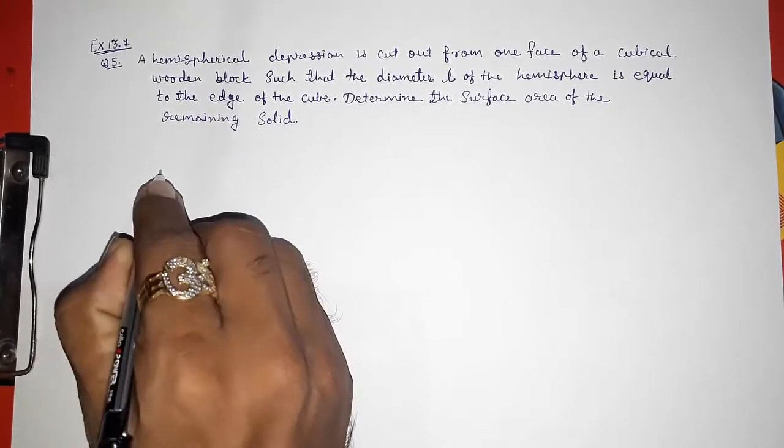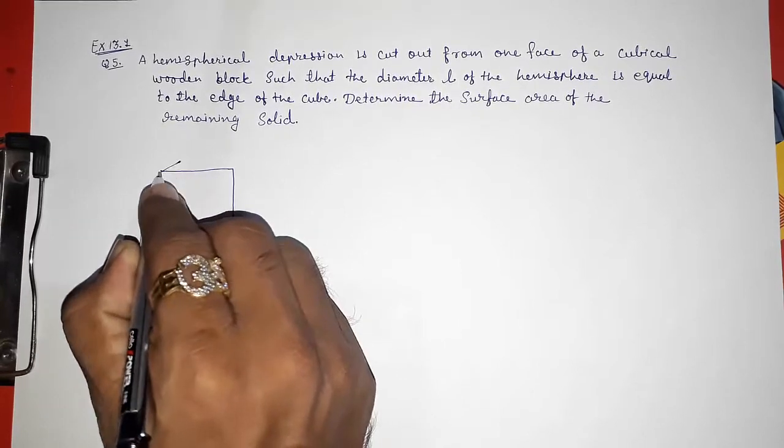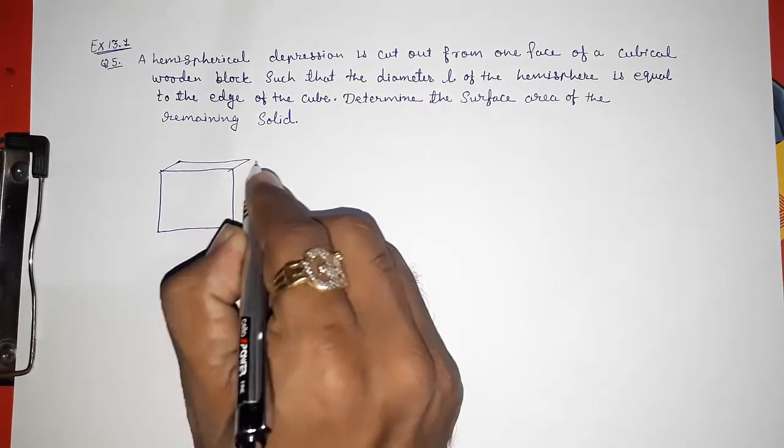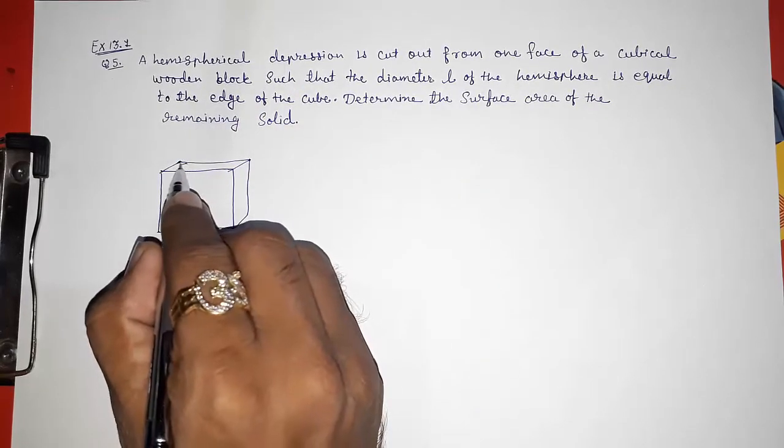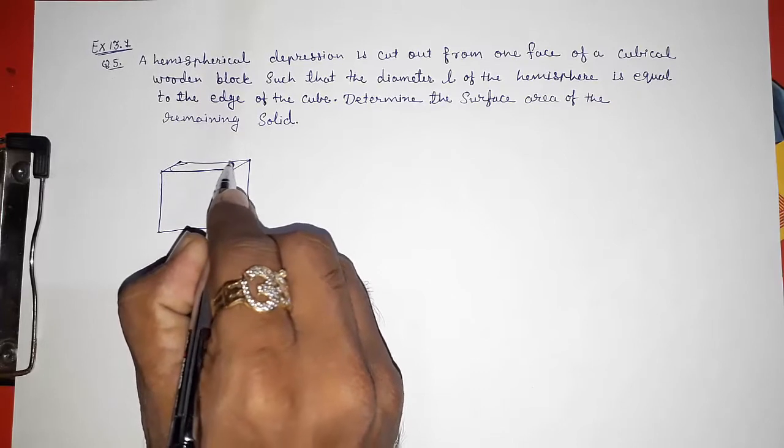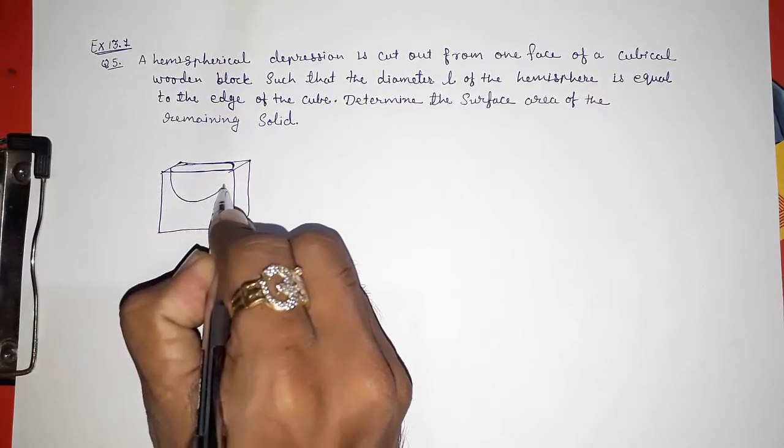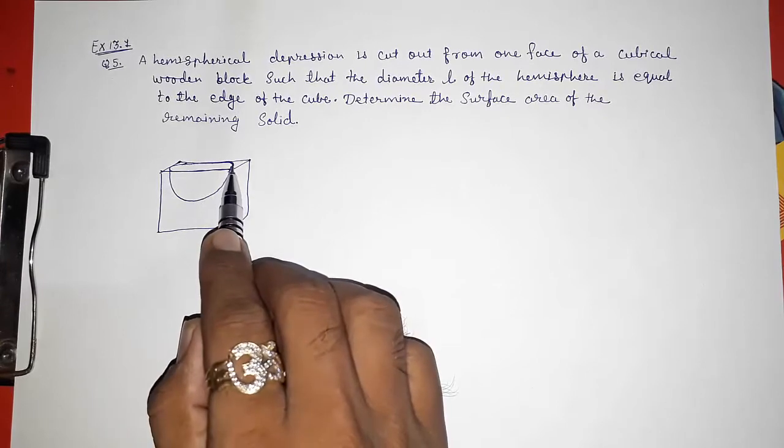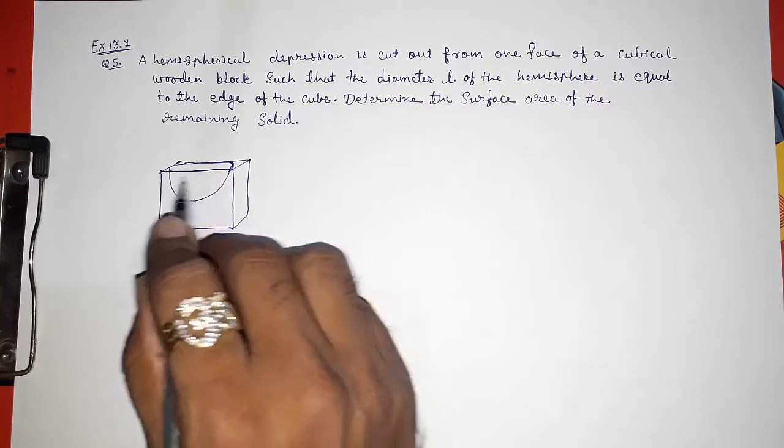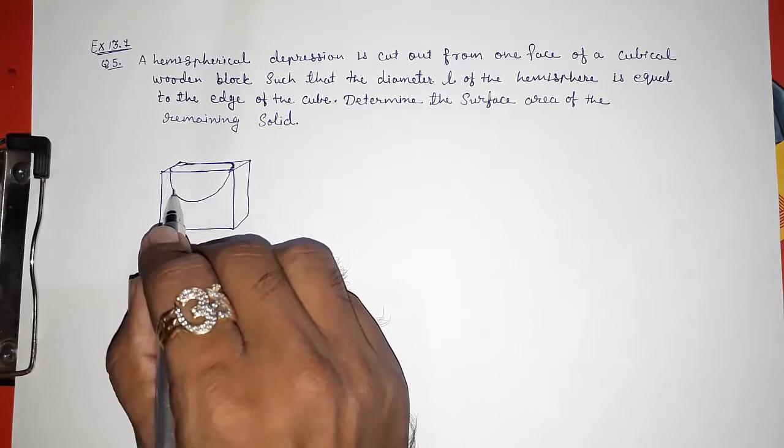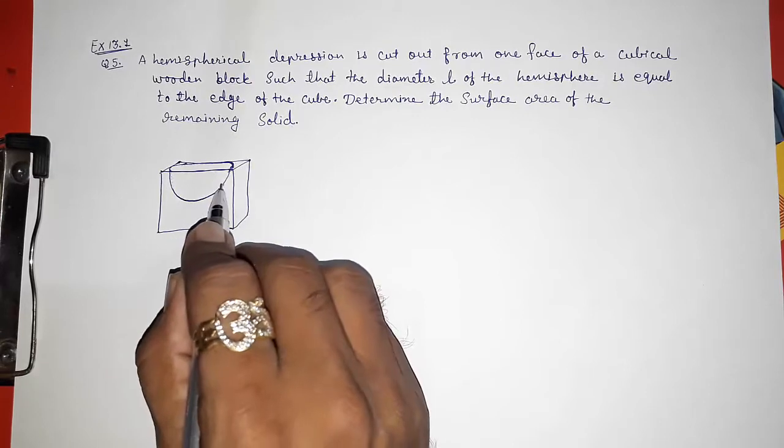So they have told us that they are having a cube. Look here, this is a cube and they had cut out a hemisphere from it. Look here, this will be the proportion from here they had cut out a hemisphere. So now what will happen? They had taken out this hemisphere but an impression of that will be left behind in the cube.